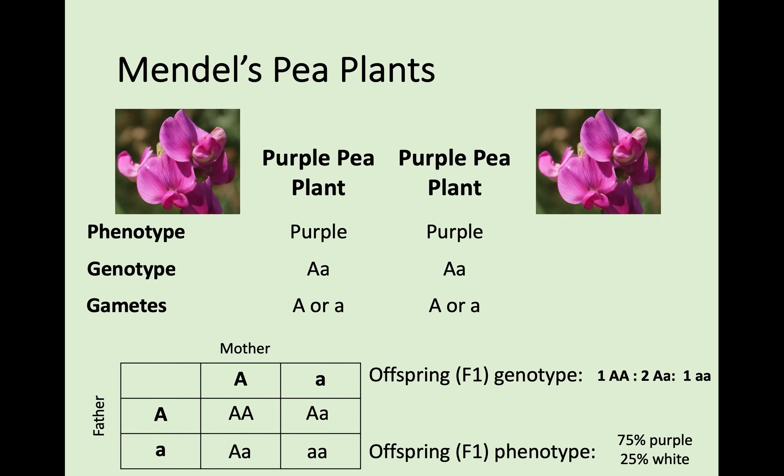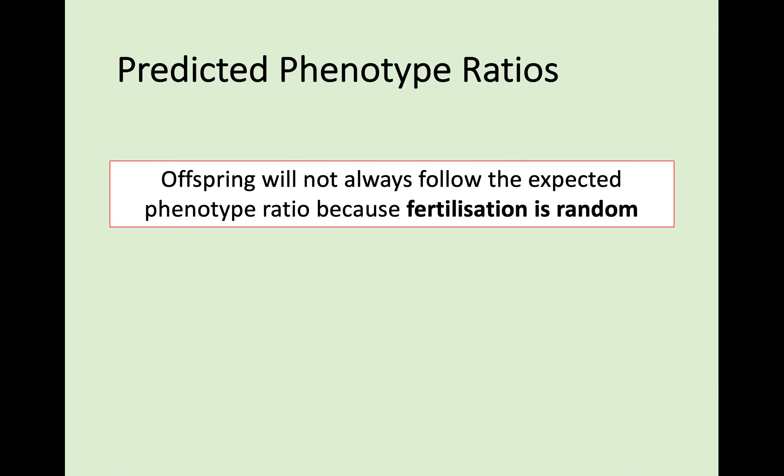That covers the full form of inheritance we look at in monohybrid crosses. The last thing to know is that these ratios will not always work out perfectly. Offspring will not always follow the expected ratio because fertilization is random — and that is really important. You cannot predict which sperm and egg, or pollen and ovule, are going to fertilize together. Although there's a one in four chance of being white, it could be that every time they are homozygous recessive entirely by chance.